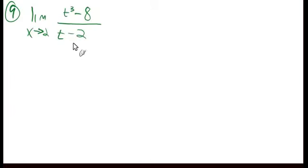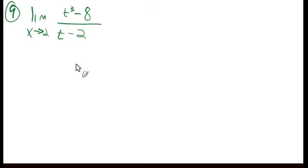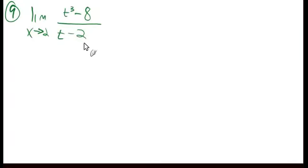The only reason we need to use any of the techniques we learn in this section is because when we try to put 2 in here, 2 minus 2 is 0 in the denominator. 0 in the denominator is not okay. So what do we do about it? We're going to try and cancel some stuff out. That's really what's behind all of these techniques. For this one, it seems to be as simple as just factoring the numerator.